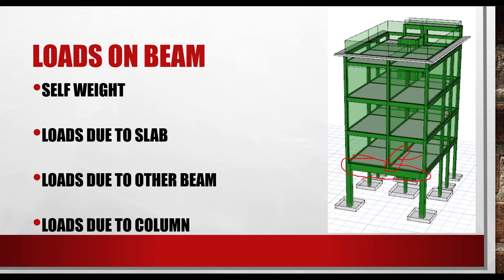Another example is a beam that is supporting a column that does not start from the ground. You can see there is no column below — this kind of column is called a floating column. It is supported by a beam instead of by another column coming from the foundation.